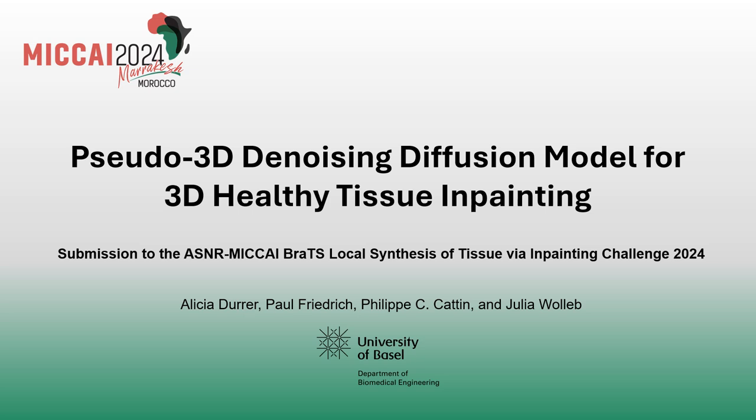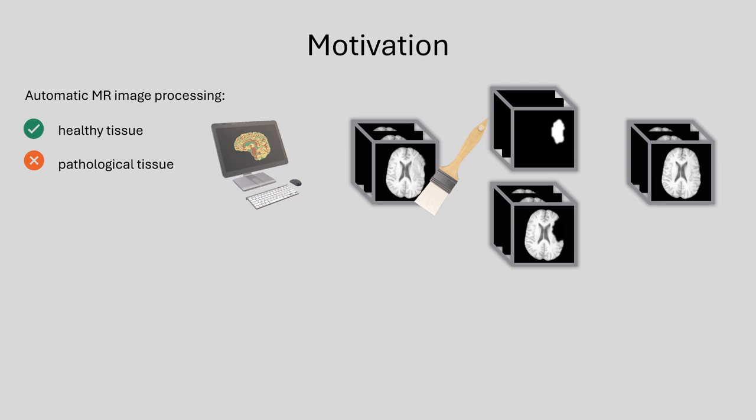Hi, my name is Alicia and I will present our submission: pseudo-3D denoising diffusion model for 3D healthy tissue inpainting. Automatic MR image processing tools, for example for brain extraction, are often optimized for healthy tissue only. It is therefore often required to identify and to replace pathological tissue by impending healthy tissue.